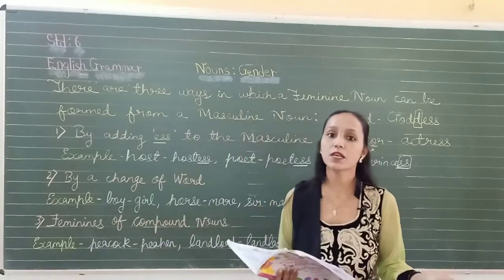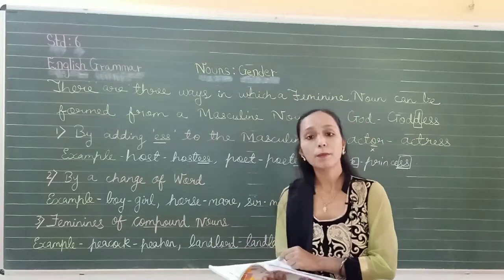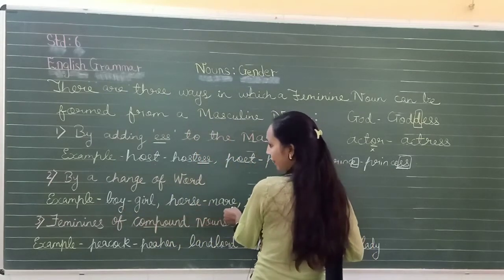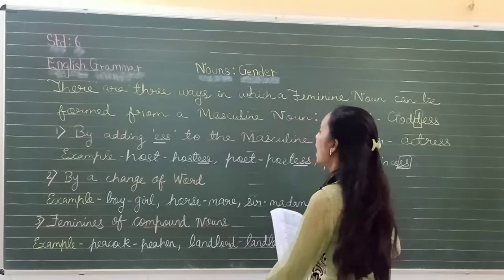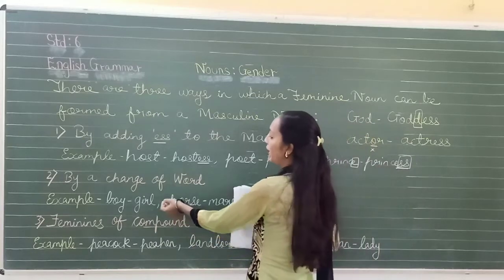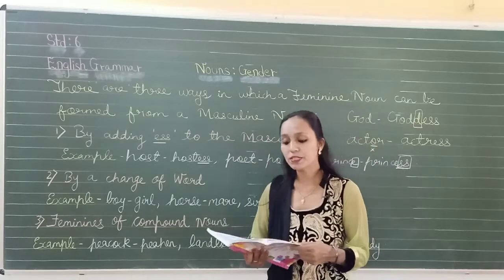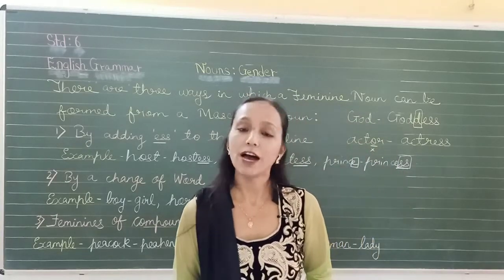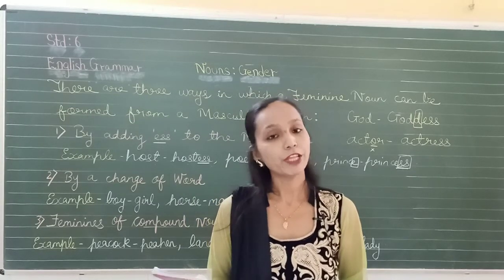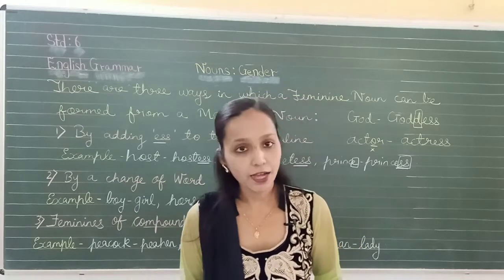For example: hero becomes heroine, mister becomes missus, bridegroom becomes bride, boy becomes girl, horse — the masculine is horse and feminine is mare, sir becomes madam. To make the feminine, the entire masculine word changes. Other examples: bull/cow, father/mother, gentleman/lady, brother/sister, son/daughter, uncle/aunt, and so on.